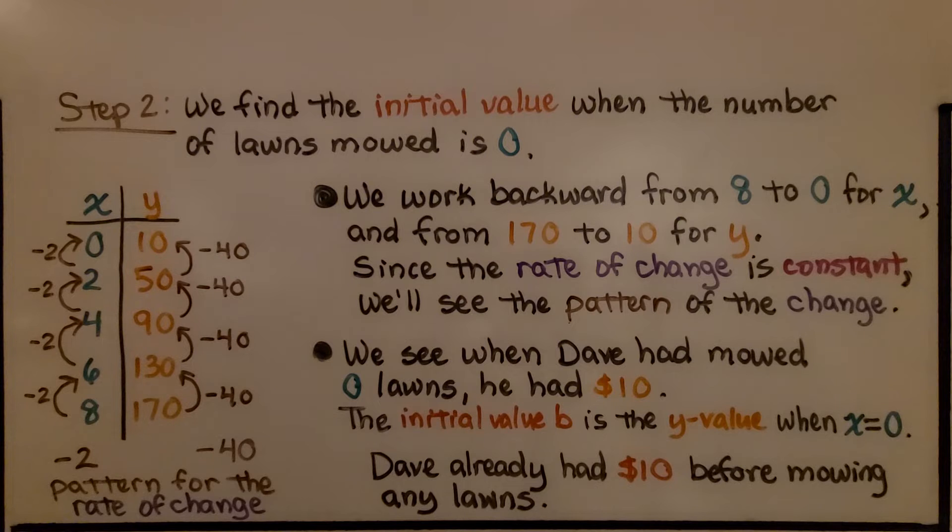We know the relationship is linear because we found a constant rate of change, 20 for our slope. Now we need to find the initial value b.